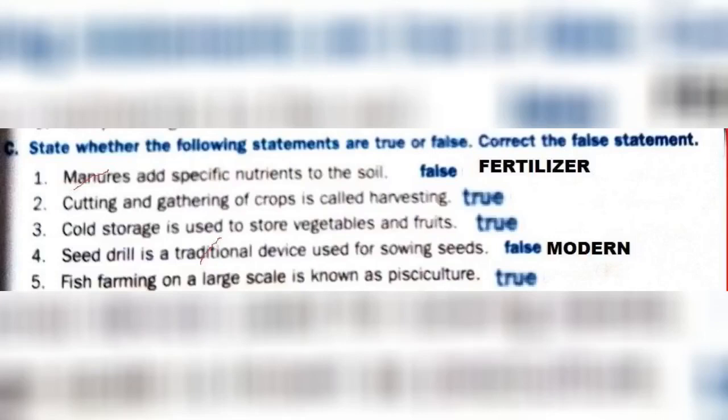Cold storage is used to store vegetables and fruits — True. Seed drill is a traditional device used for sowing seeds — False, because seed drill is a modern device used for sowing seeds. Fish farming on a large scale is known as pisciculture — True.